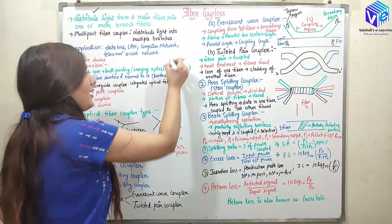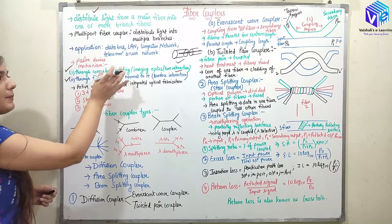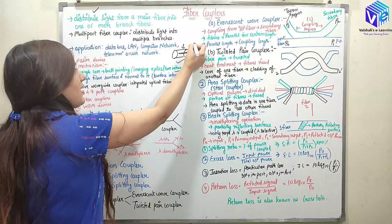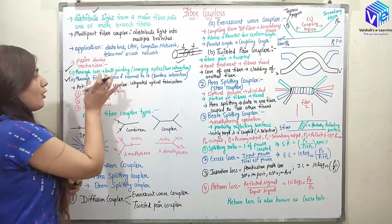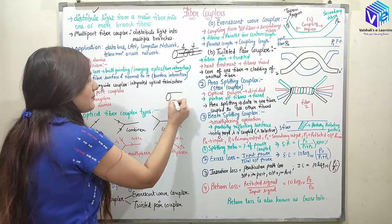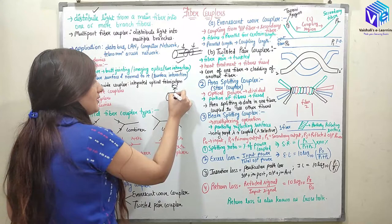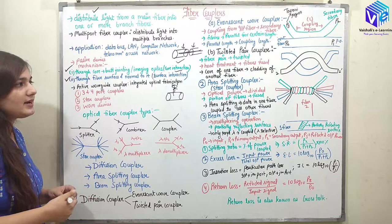In core interaction coupling, one fiber is connected to another fiber such that both cores are connected — this is called butt joining or image optics. Power is coupled from one fiber to another fiber through the joint. In surface interaction coupling, power from the fiber surface is transmitted normal to it, so power from one fiber couples to a normal fiber through the surface interaction. These are the two types of passive mechanisms.